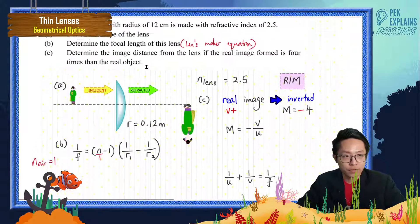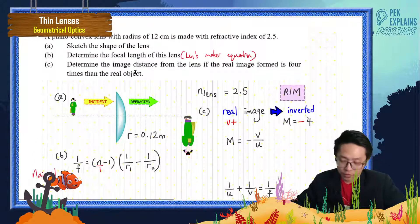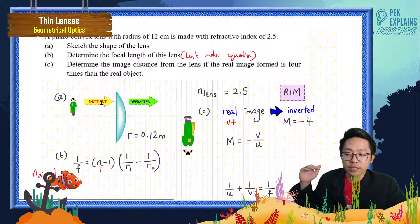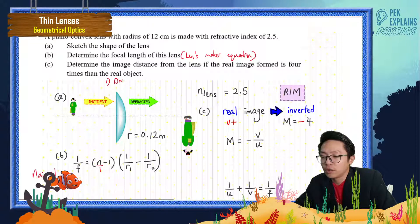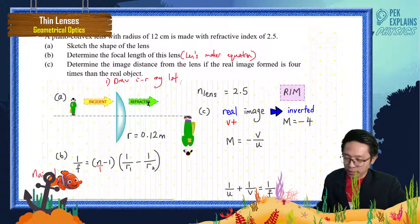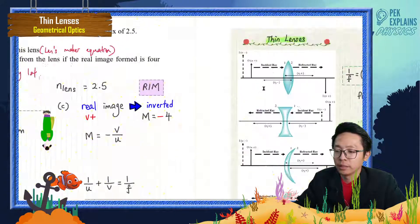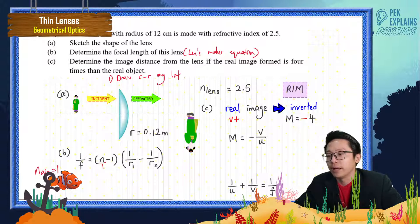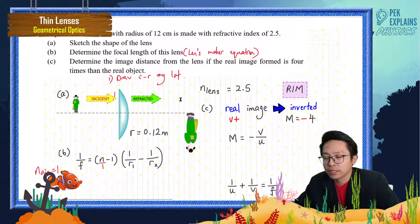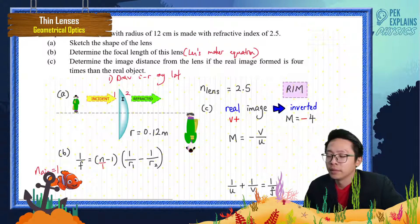Always draw the object, the lens, then the incident ray coming from the object passing through the lens to become the refracted ray. The surface that the incident ray encounters first is the first surface (R1), and the surface the refracted ray exits from is the second surface (R2).